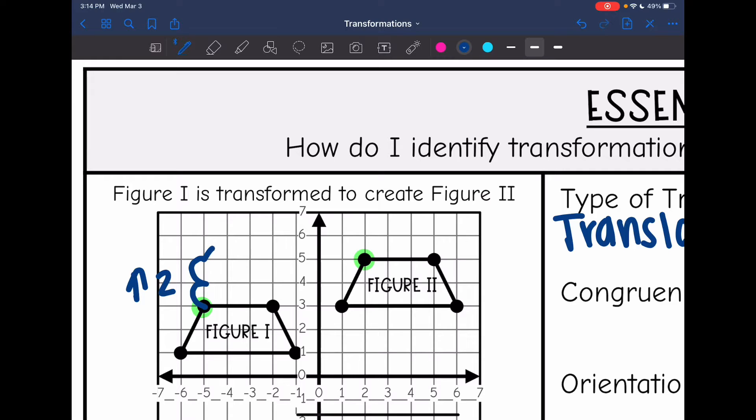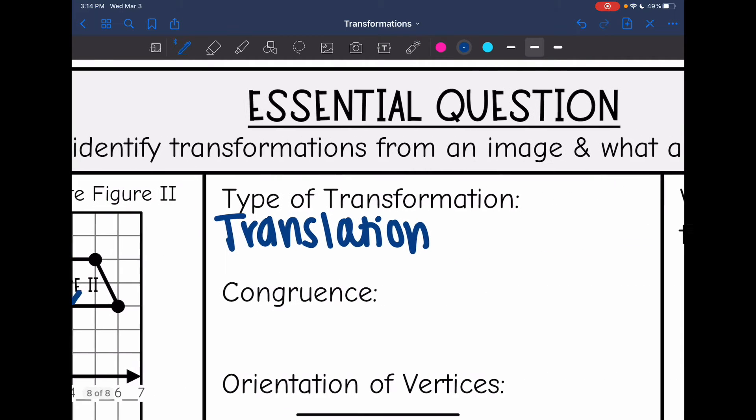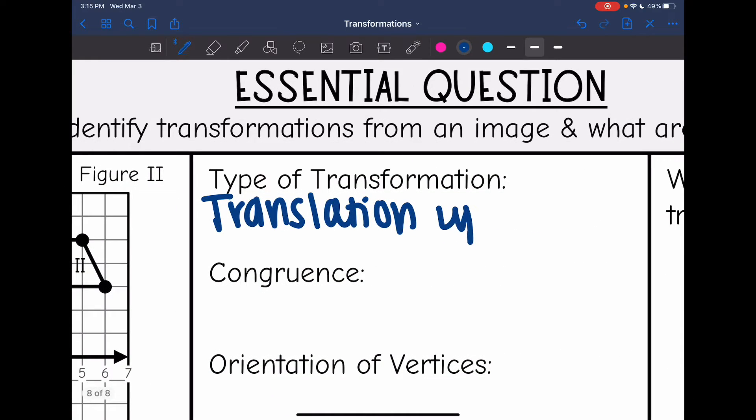And right, one, two, three, four, five, six, seven. And I knew that this was the original and this was the new one because it says that figure one is transformed to create figure two. So I went up two and right seven.